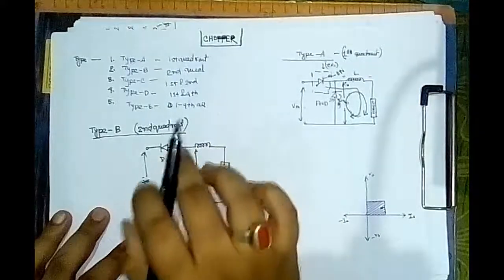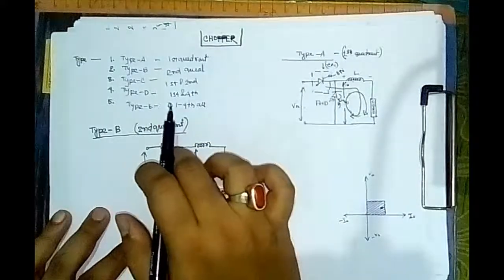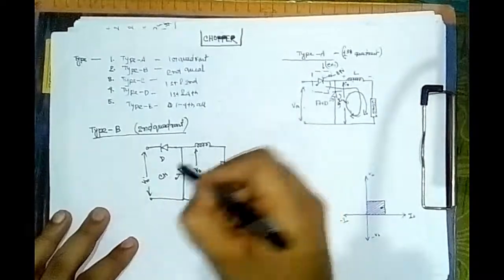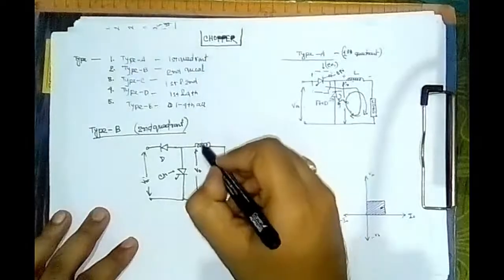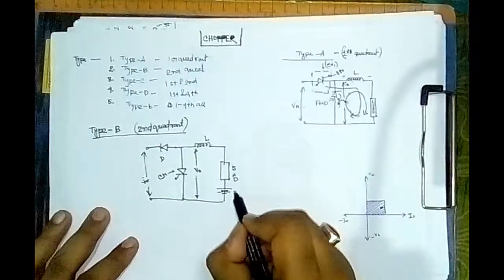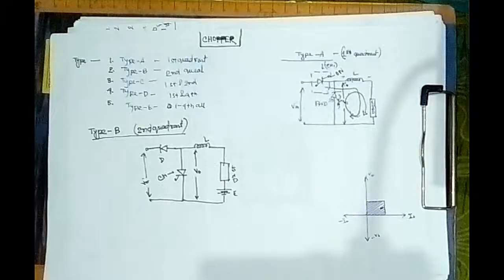Basically it is not a freewheeling diode, it is a very simple diode, and this is the thyristor. So all the nomenclatures are done.